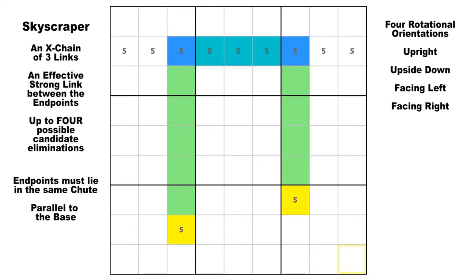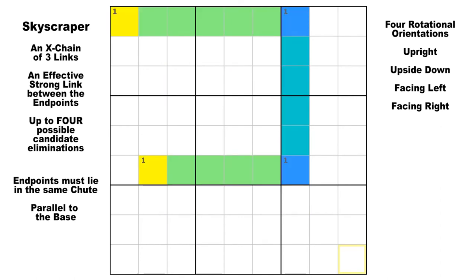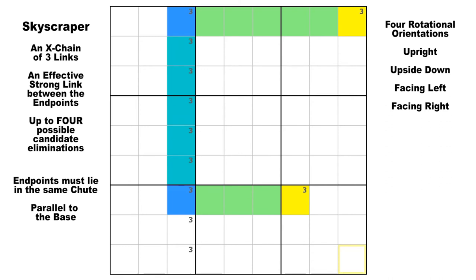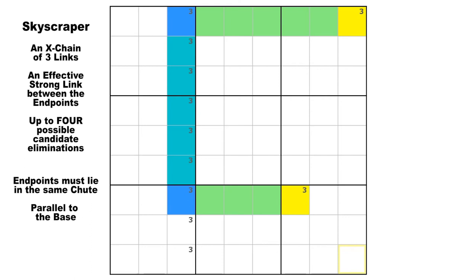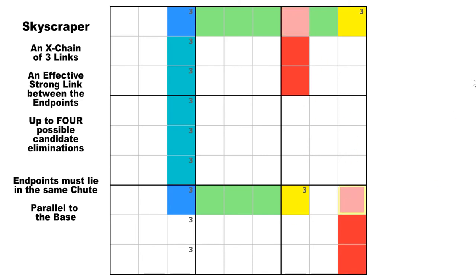The four orientations are: upright, upside down, facing left, and facing right. Beyond that, they work like any X-chain — any same-digit candidate that can see both ends of the chain must be false. With the skyscraper, there can be up to four eliminations. But be careful: some cells do not see both endpoints. The only cells where candidate eliminations are possible are offset cells that see both endpoints. Those are the only four red cells where eliminations are possible.